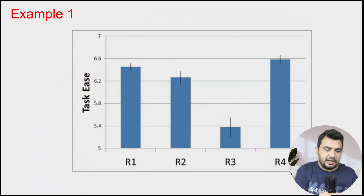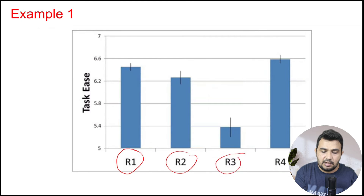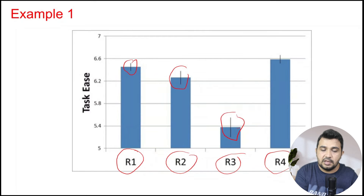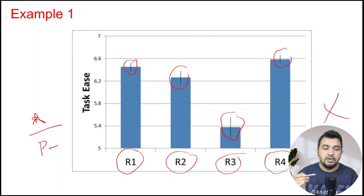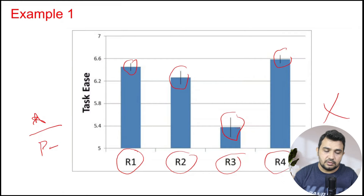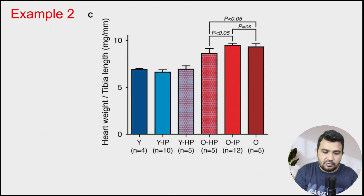Now let's see some examples. In example one, we have different treatments with standard error shown, but there is no p-value — neither stars nor any mentioned p-value. If there is no significance indicator, we cannot identify whether the data is significant or not.